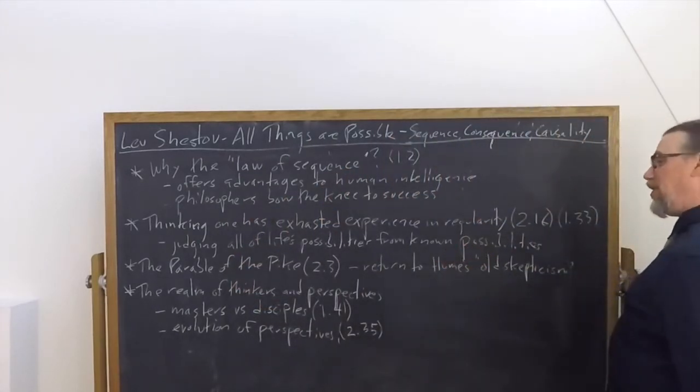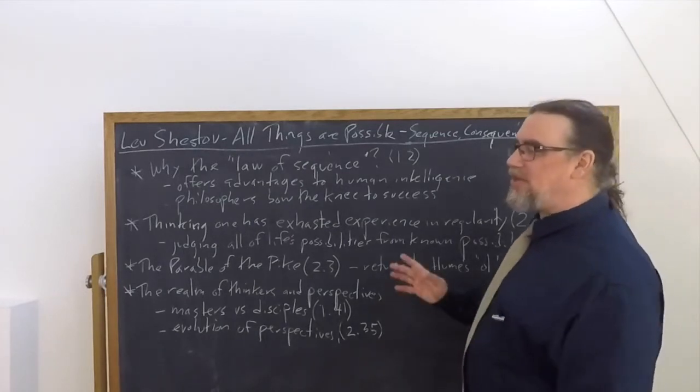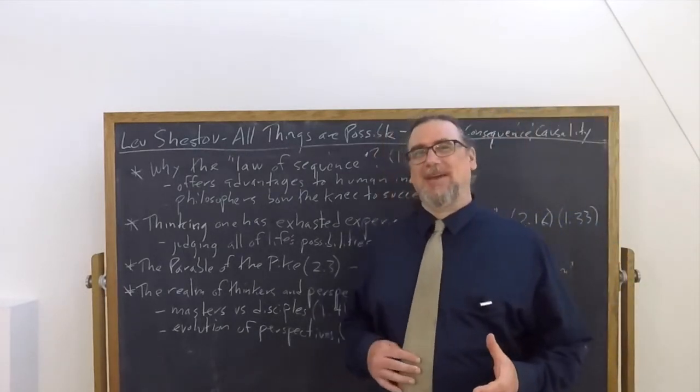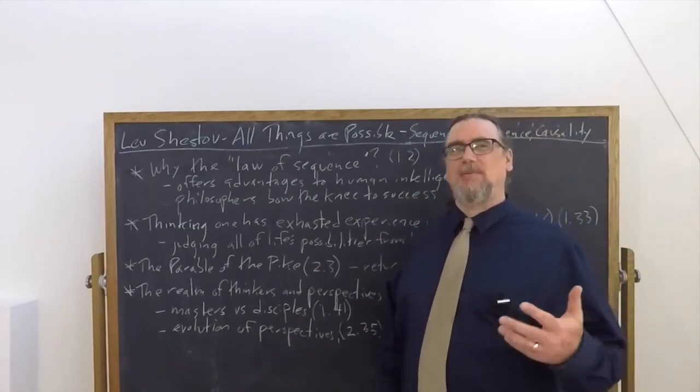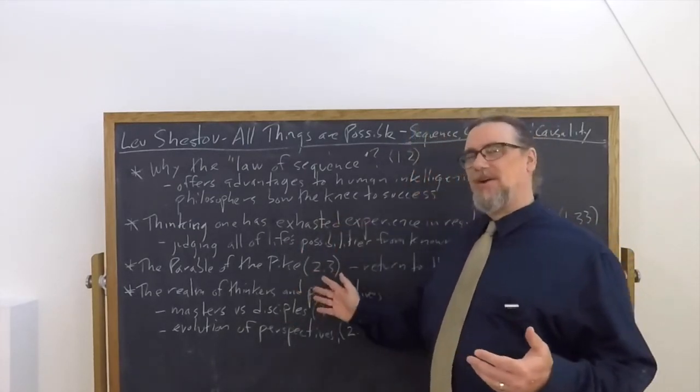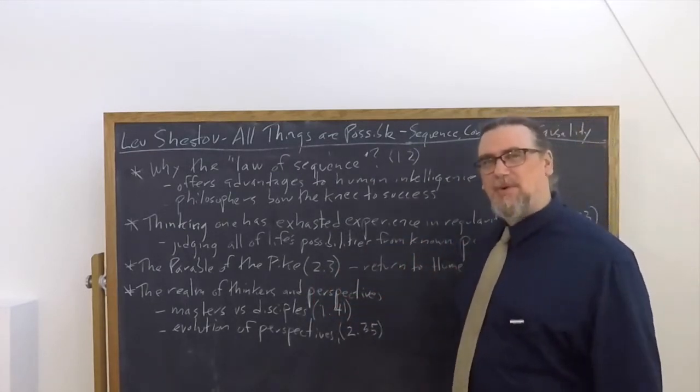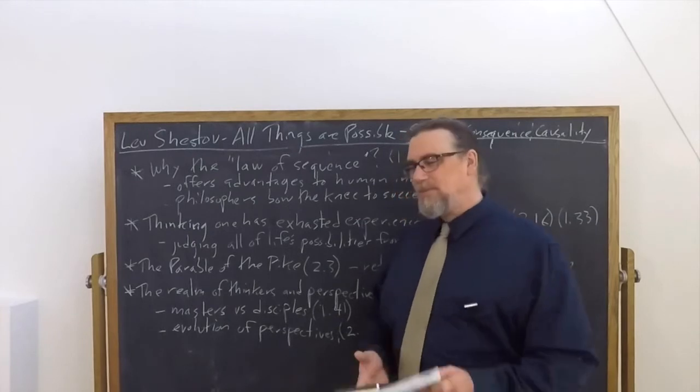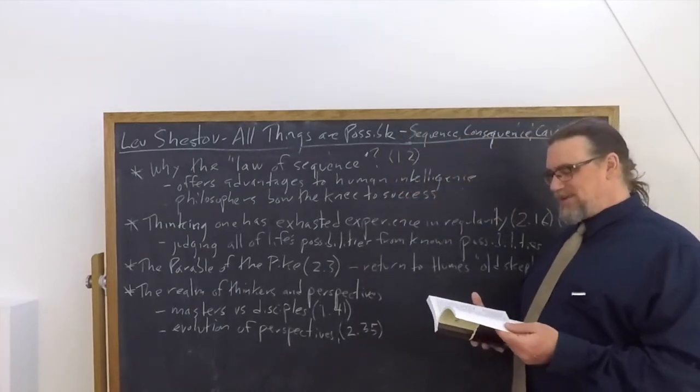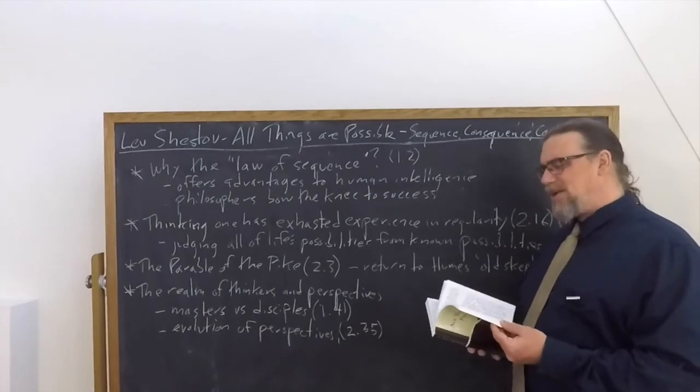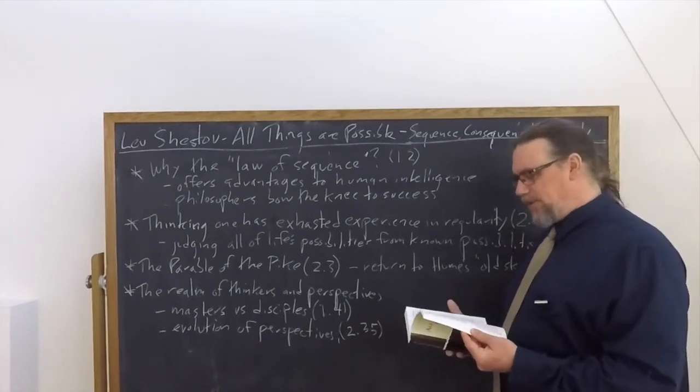So the parable of the pike is quite powerful, I'd say. The other thing that's very interesting in this book is that Shestov also talks about this as how it applies to thinkers, writers, and perspectives, like philosophical perspectives on things. And he's got this amazing discussion, which is completely, as far as I can tell, correct, about masters and disciples and ideas.